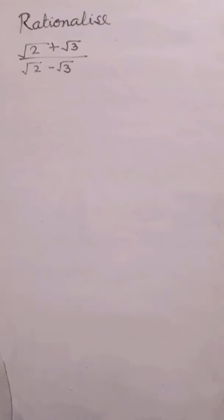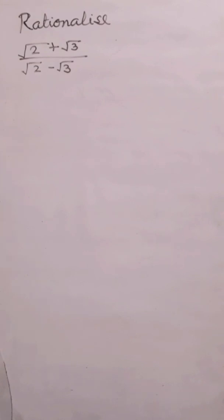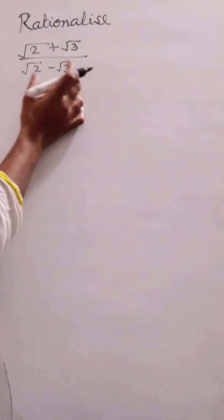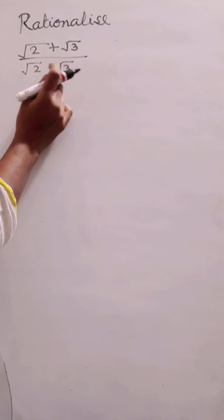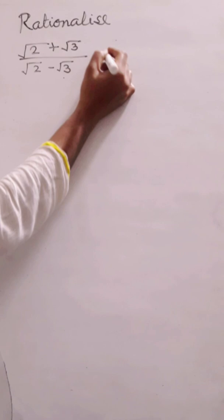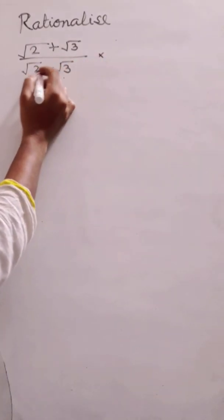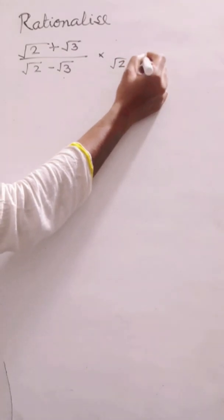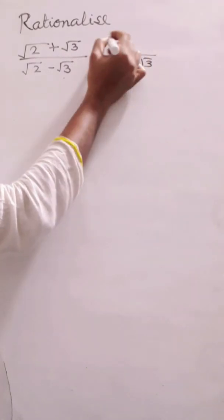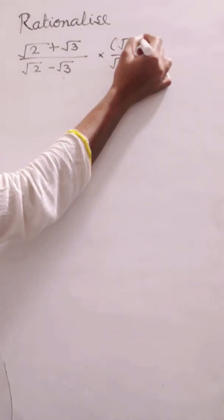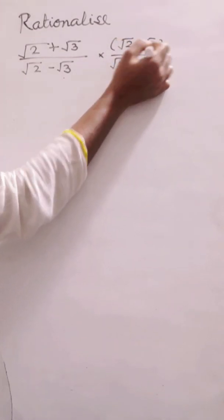In this exercise we need to rationalize the given fractions. Whatever we have in the denominator, we will multiply with the same denominator but with the opposite sign in between. So here I am going to multiply with (√2 + √3) over (√2 + √3) in both the numerator and denominator.